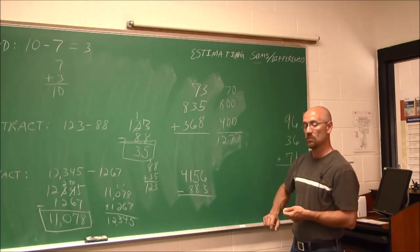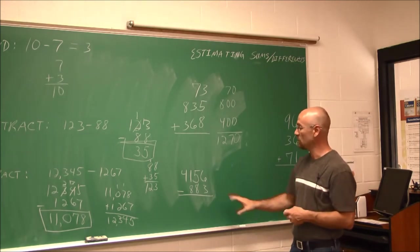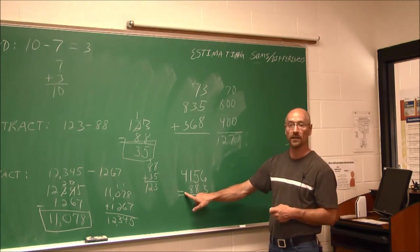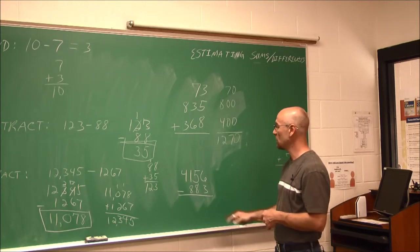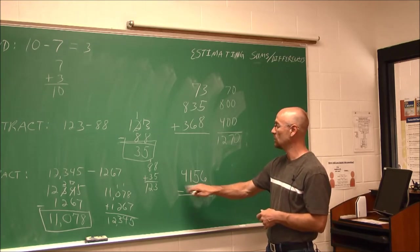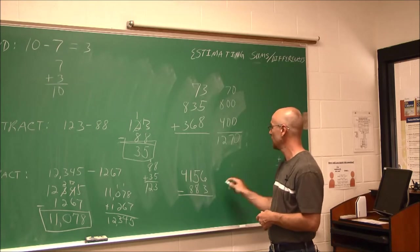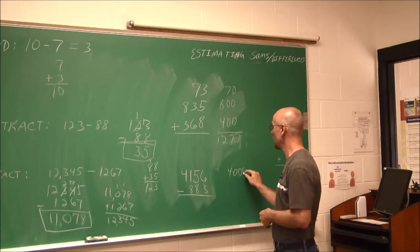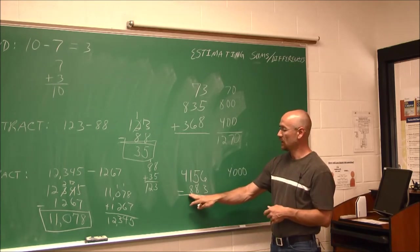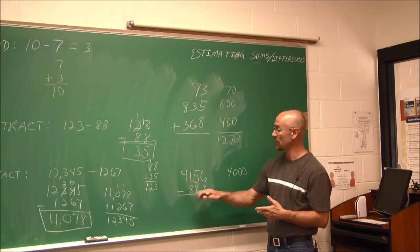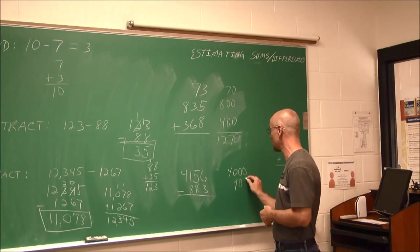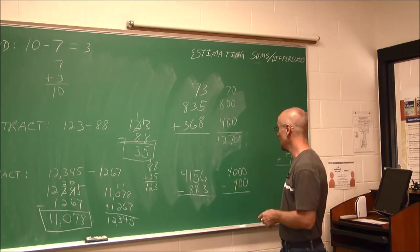All right, let's look at this example. This also, rounding to estimate, also works for finding the difference or doing subtraction. So again, we're going to look at the leftmost value and say, well, this 1 would round that 1,000 place to 4,000. And if we look at this, this is 8. The value to the right is an 8, so this is more than 5. It's going to round that up to 900, because it's closer to 900 than it is 800.